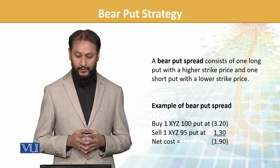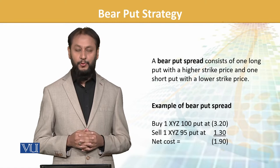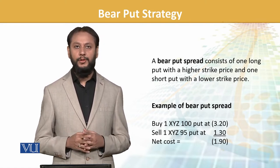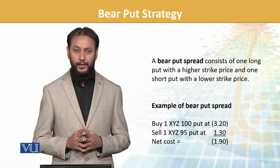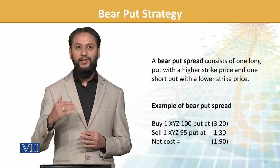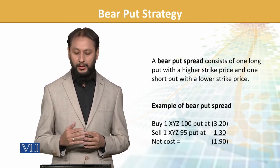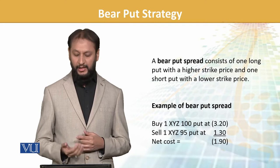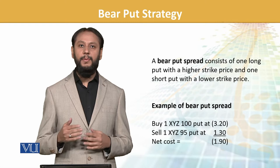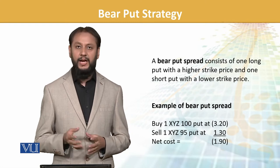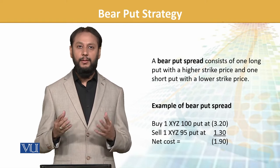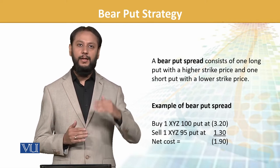We buy one XYZ 100 put at 3.2 dollars — this means our outflow is 3.2 dollars. And because we have a short put at the lower strike price of 95, the premium received is 1.3 dollars. So effectively, our net cost is 1.9 dollars.